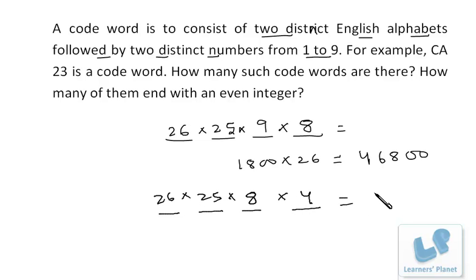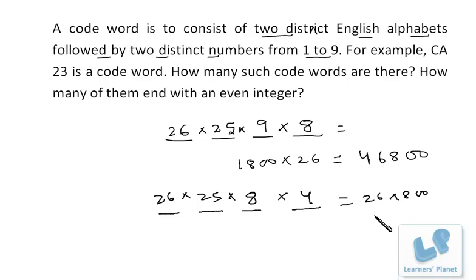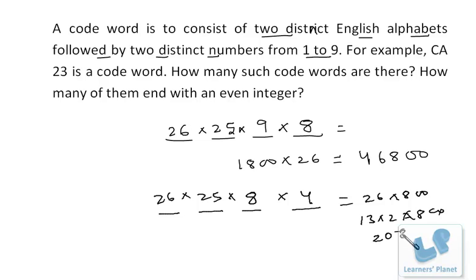Calculating: 25 × 8 = 200, 200 × 4 = 800, 800 × 26 = 13 × 2 × 800 = 1600 × 13 = 20,800. So 20,800 code words end with an even integer.